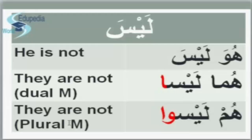They are not — plural masculine. 'They are' is هُم, and they are not is هُم ليسوا. ليسوا — the difference here is that سَ ends short in ليس while here it is a long sound: سُو. هو ليس — he is not. هُمَا ليسَا — they are not, dual masculine. هُم ليسوا — they are not, plural masculine.